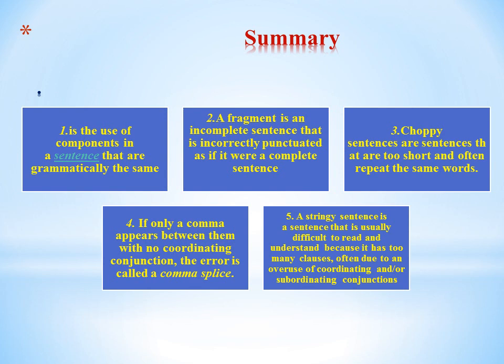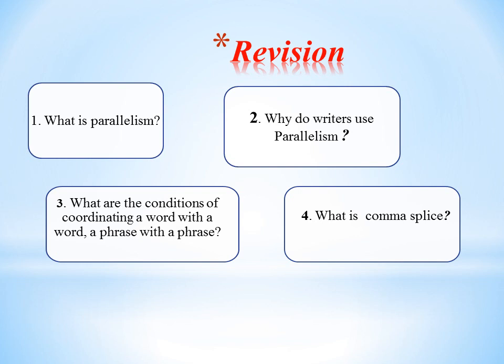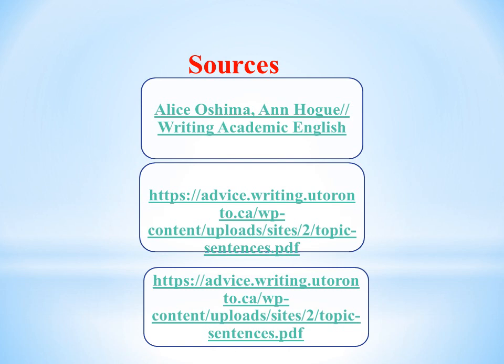Summary: parallelism is the use of components in a sentence that are grammatically the same. A fragment is an incomplete sentence that is incorrectly punctuated as if it were a complete sentence. Choppy sentences are sentences that are too short and often repeat the same words. If only a comma appears between two independent clauses with no coordinating conjunction, the error is called a comma splice. A stringy sentence is difficult to read because it has too many clauses due to overuse of coordinating and/or subordinating conjunctions. Revision questions: What is parallelism? Why do writers use parallelism? What are the conditions for coordinating a word with a word, phrase, and clause? What is a comma splice?